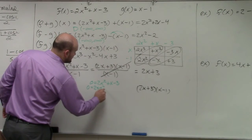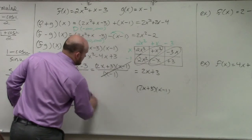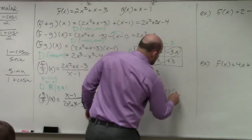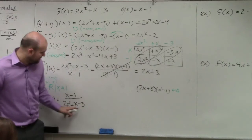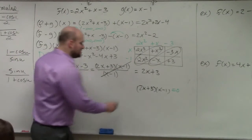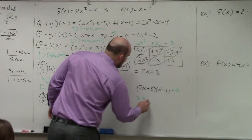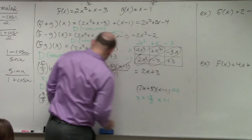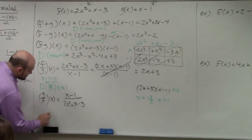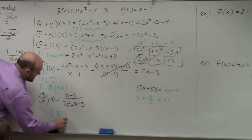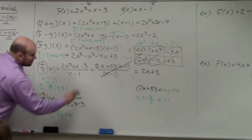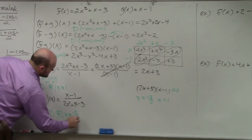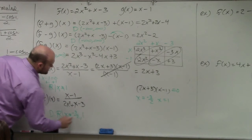2x plus 3. Let me do it over here. We could really set this equal to 0, right? Because that's your denominator. That's that factored out. So therefore, we'd say x equals negative 3 halves and x equals 1. So the domain for this is all real numbers such that x cannot equal negative 3 halves and positive 1.